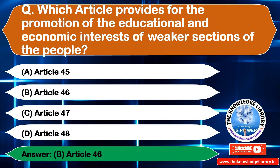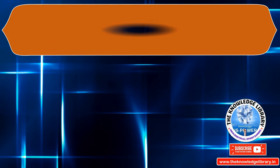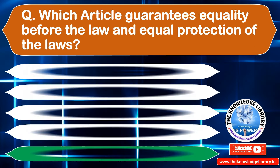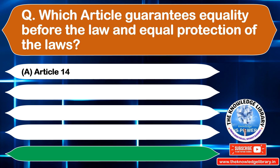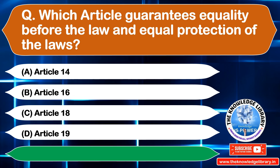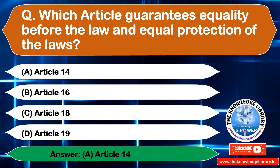The next question is: which article guarantees equality before the law and equal protection of the laws? Option A: Article 14, Option B: Article 16, Option C: Article 18, Option D: Article 19. The correct answer is Option A: Article 14.